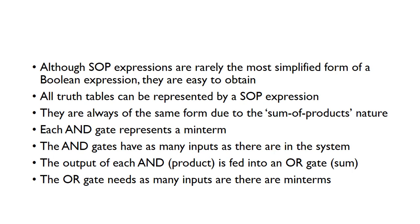When we've got three inputs A, B, and C, the AND gates need three inputs. Each of these minterms, each AND function, is ORed together and fed into an OR gate to sum them up. The OR gate needs as many inputs as there are minterms in the system.